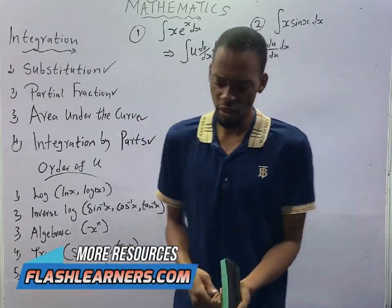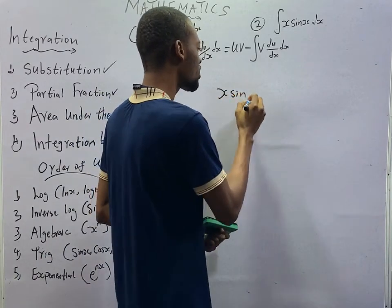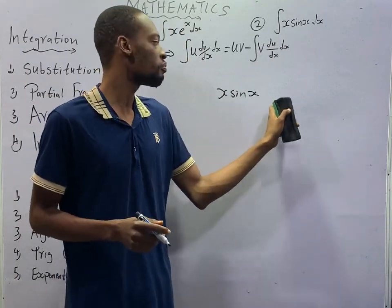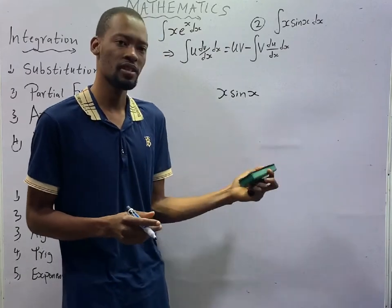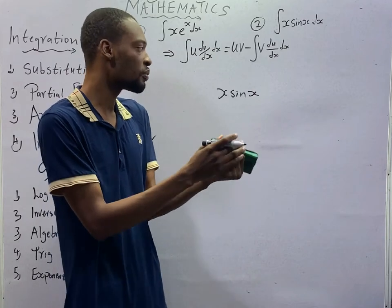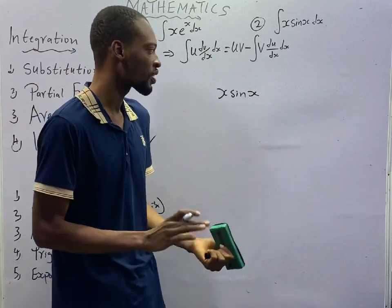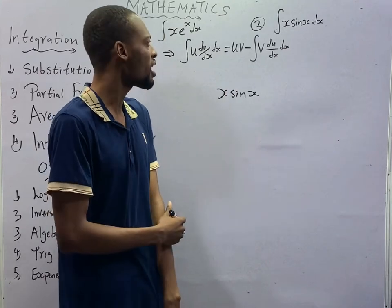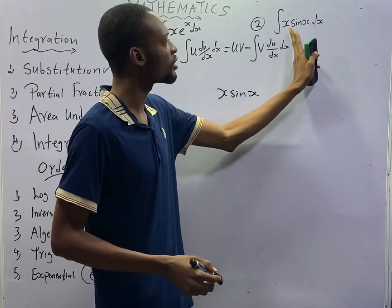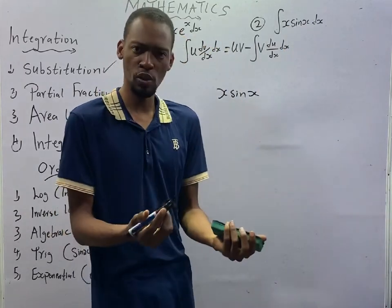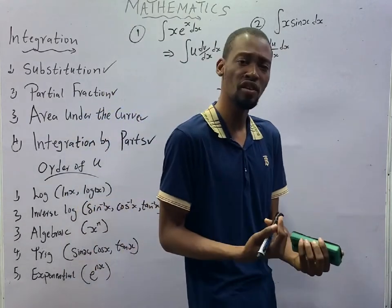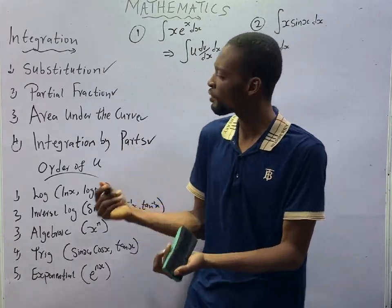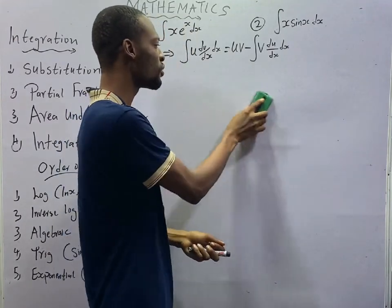For example, if I say differentiate s·sin(s), you will differentiate s and keep sin(s) constant, plus differentiate sin(s) and keep s constant — you differentiate one and keep the other constant. That is the product rule. Once you have a product, you use the product rule. However, when it comes to integration, if you are integrating products, we don't use the product rule because we are not dealing with differentiation. We use an equivalent of the product rule, and that equivalent is referred to as integration by parts. Anytime you are given products to integrate, you simply apply the integration by parts formula.